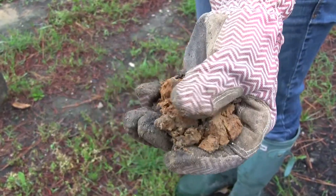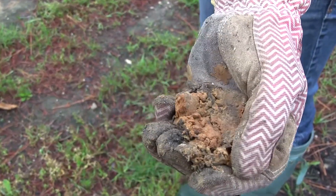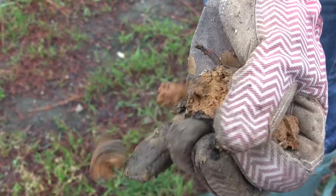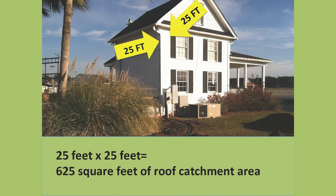Let's do an example. You live in the low country and have very sandy soils. You have calculated your catchment area, which is your rooftop, as 25 feet by 25 feet, which equals 625 square feet.